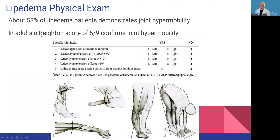We assess for hypermobility using the Beighton score. The components start with the wrist — if you can bring your thumb to your wrist, that's a hypermobile wrist. Also bending a finger back more than 90 degrees, hyperextending the elbow, hyperextending the knee, or putting hands on the floor with legs straight. The maximum score is nine. We see a high prevalence of hypermobility in our patients with lipedema, about 60 to 70%.